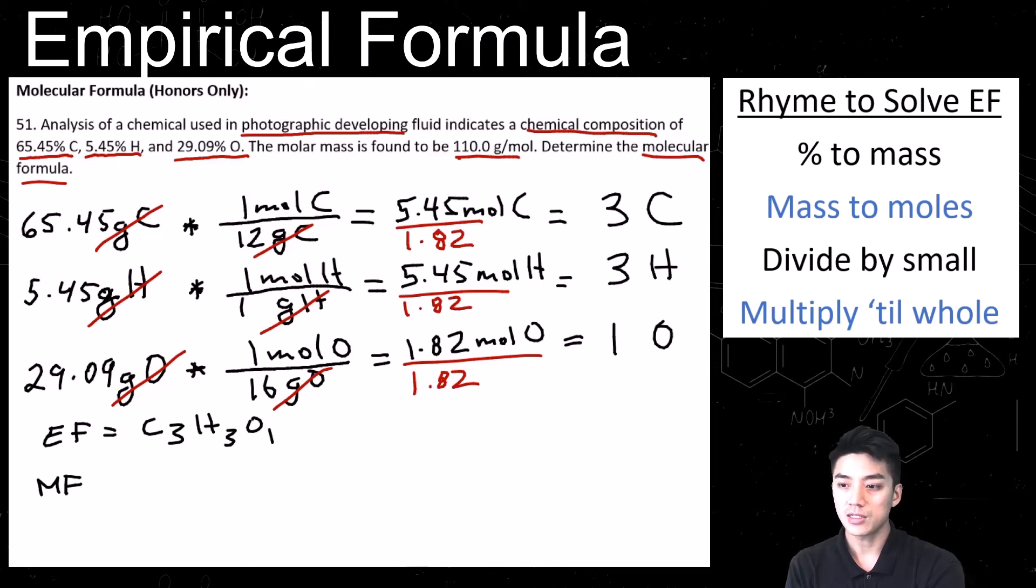But we're being asked to find the molecular formula. So there is one additional step where we're going to take N, which is a ratio, times the empirical formula. So I will explain what N is. And N is the ratio between the mass of the molecular formula divided by the mass of the empirical formula.